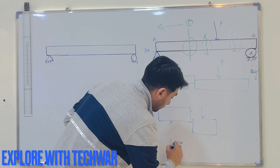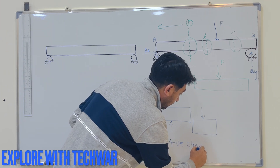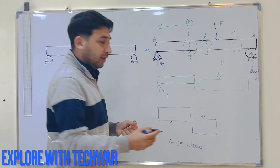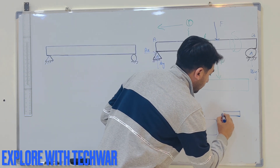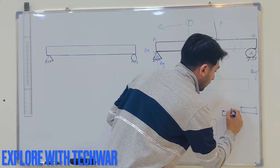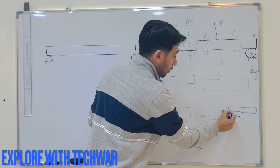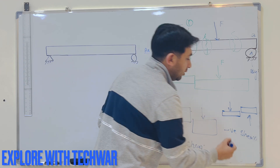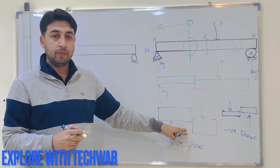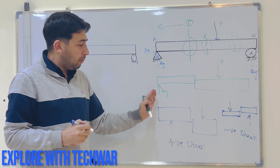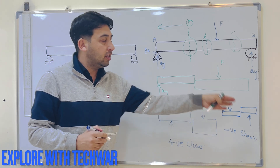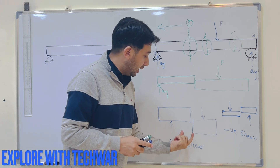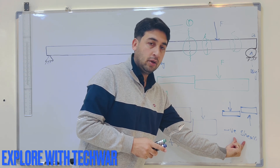This is a sign convention — you can take it the other way around. But if left-going-up and right-going-down is positive, then the opposite — left side going down and right side going up — will be negative shear. Usually we use this sign convention: left up / right down is positive shear, and the reverse is negative shear.